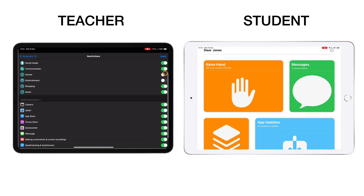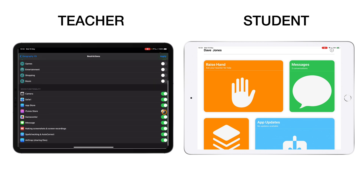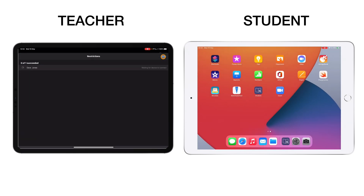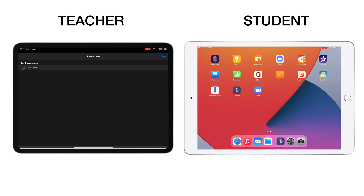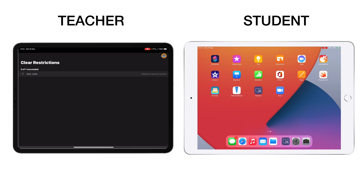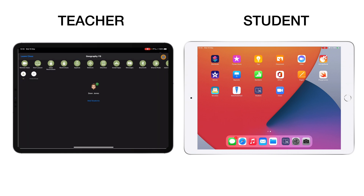In this lesson, I might want to make sure students don't have access to games, entertainment, shopping, or music — but social media is fine, maybe I want them contacting people outside school for opinions. Down at the bottom I can turn off game center and messaging, but keep screenshots, camera, and Safari available. Tapping apply connects to the student's device and restricts those things instantly. I can clear those restrictions by tapping clear restrictions and confirming — and the apps instantly pop back up.